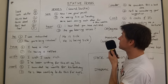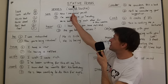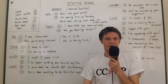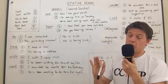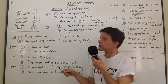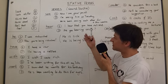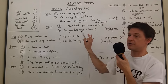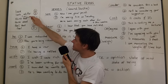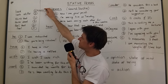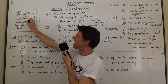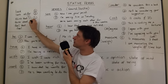Welcome to the second lesson on stative verbs or state verbs. Please watch lesson one first if you'd like a brief introduction. Today we're going into more detail. In the first part I looked at the difference between 'look,' which is often stative, and 'look at' or 'look for.'